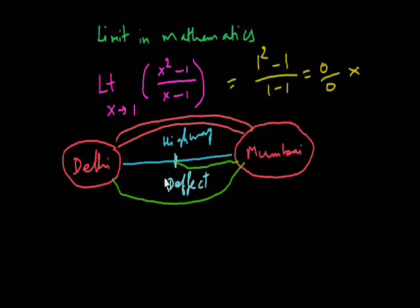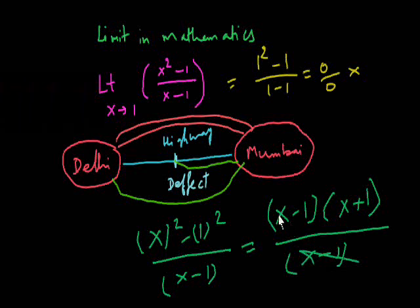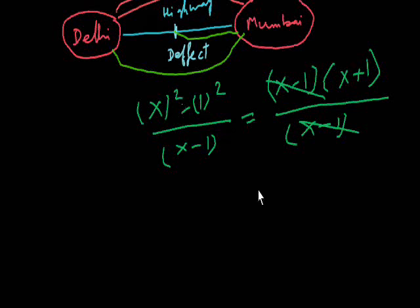Suppose in the same example, if I am using simple formula a²-b² divided by x-1, x², x-1, x+1, a+b, a-b, and this will cut. Now answer will be, if I am putting limit 1 in it, 1+1, this is 2.